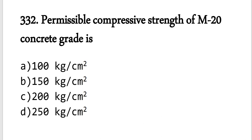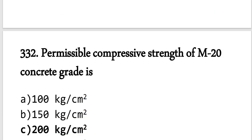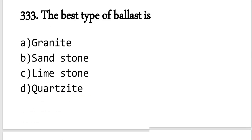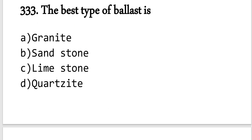Question number 332: The permissible compressive strength of M20 concrete is 20 MPa, which is equivalent to 200 kg per centimeter square.